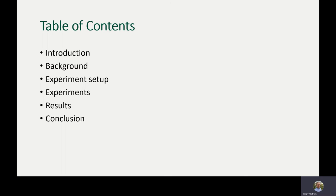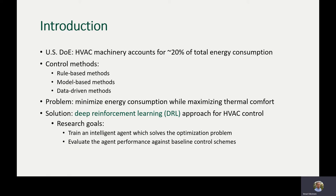According to the United States Department of Energy, HVAC machinery accounts for roughly 20 percent of total energy consumption in the world. This is a staggering number and definitely has an effect on the global carbon footprint. There are multiple methods of addressing this and trying to minimize energy consumption — one is to make the machinery more efficient, and the other is to control it in a way which results in minimized energy consumption. In this work we are going to focus on the control methods.